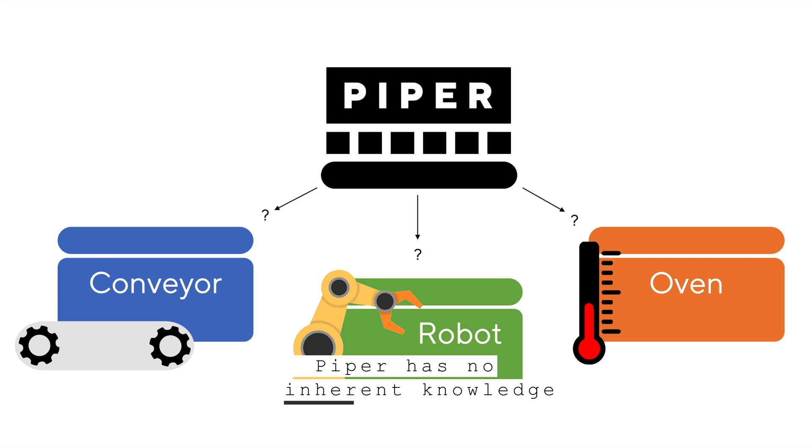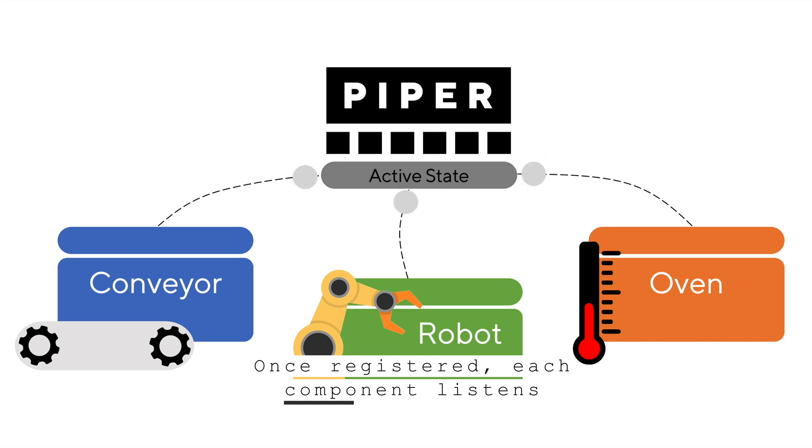Piper has no inherent knowledge of the individual components on boot-up. Instead, they are each responsible for registering with Piper. This is their way of letting Piper know that they are a part of this machine. Once registered, each component listens for a state broadcast from Piper.